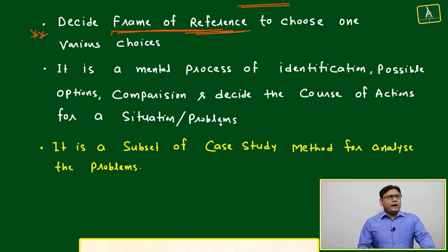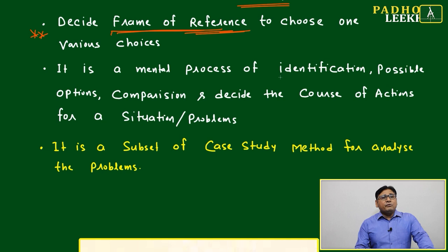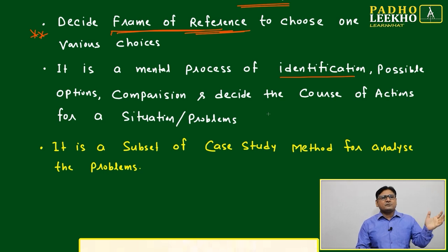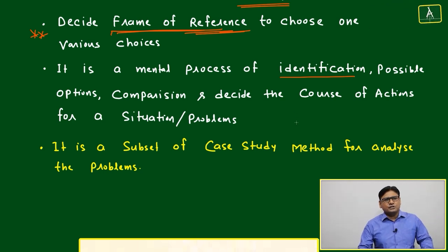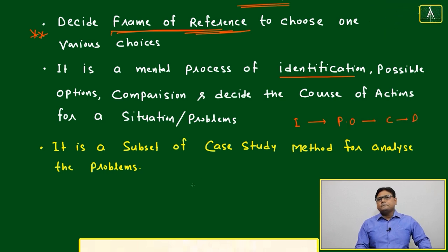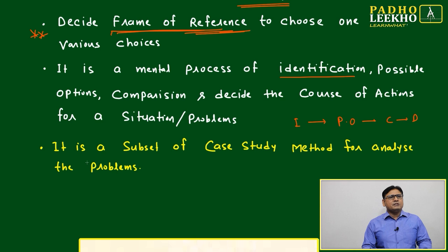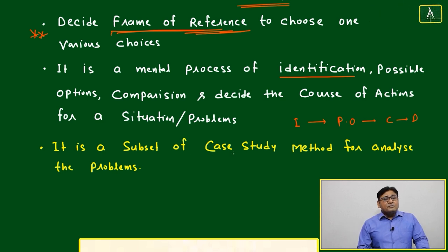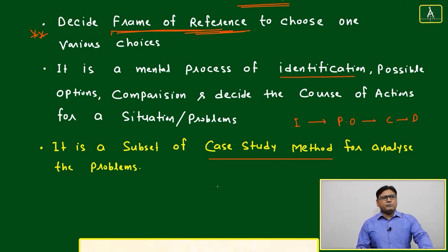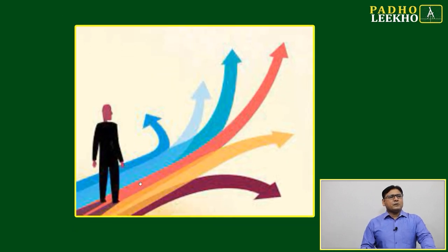Decision making is a mental process of identifying possible options, comparing reasons, and deciding the course of action for a situation or problem. This is a sequence we need to follow. It is also a subset of the case study method, used to analyze problems.